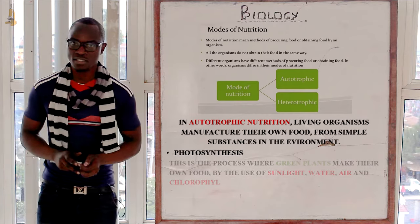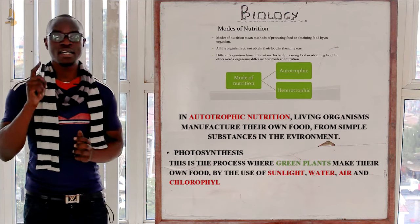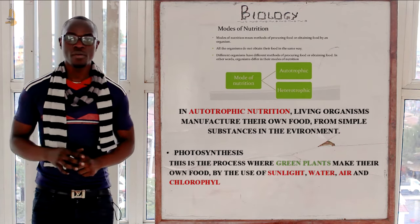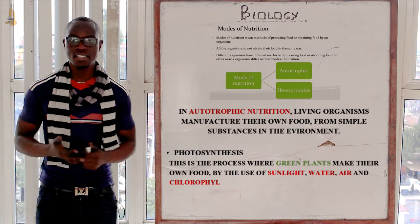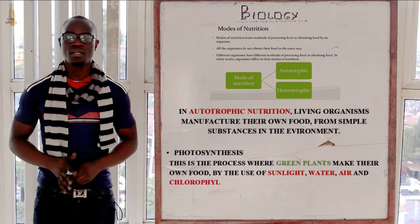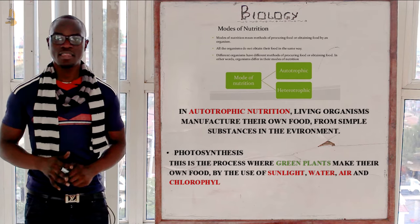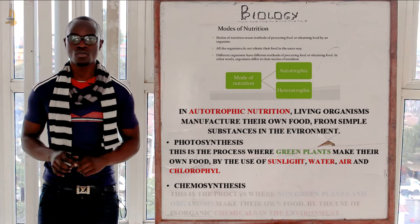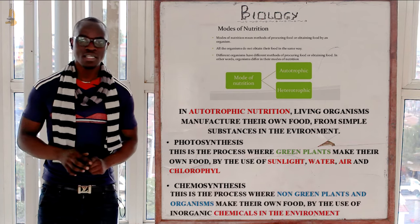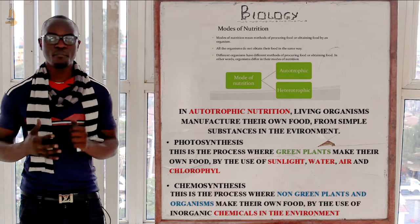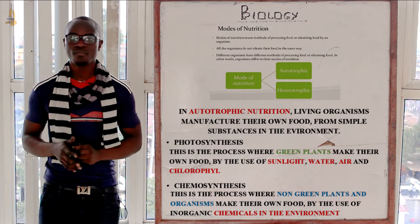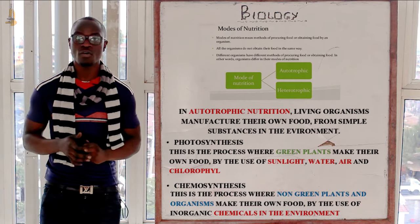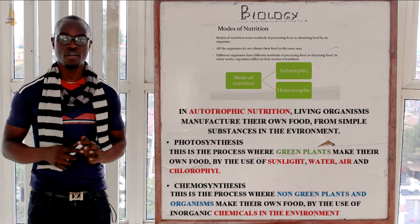What is photosynthesis? This is the process by which green plants make their own food using water, sunlight, air — the requirements for photosynthesis are well known. What is chemosynthesis? Chemosynthesis is the process where non-green plants make their own food using certain chemicals from their environment.